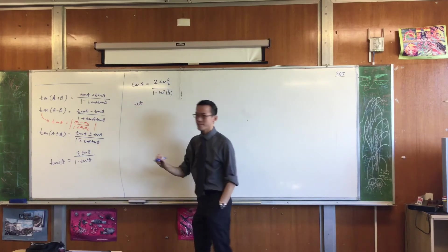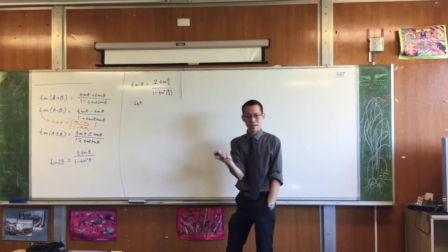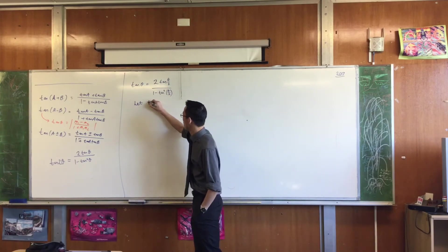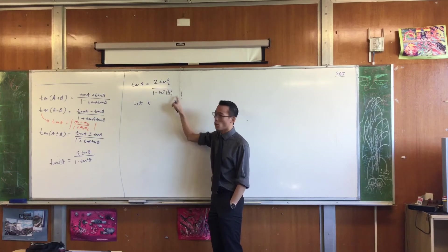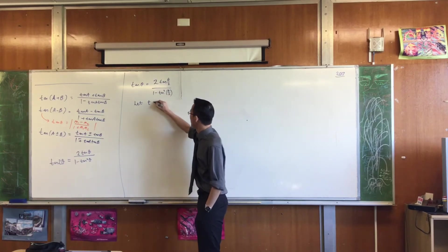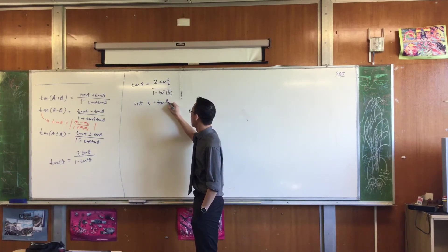So we say, let, and we introduce a new pronoun rule, since we're dealing with tan, we choose the letter T. And we say, let's let T equal this weird, awkward half angle thing. Tan of θ/2.